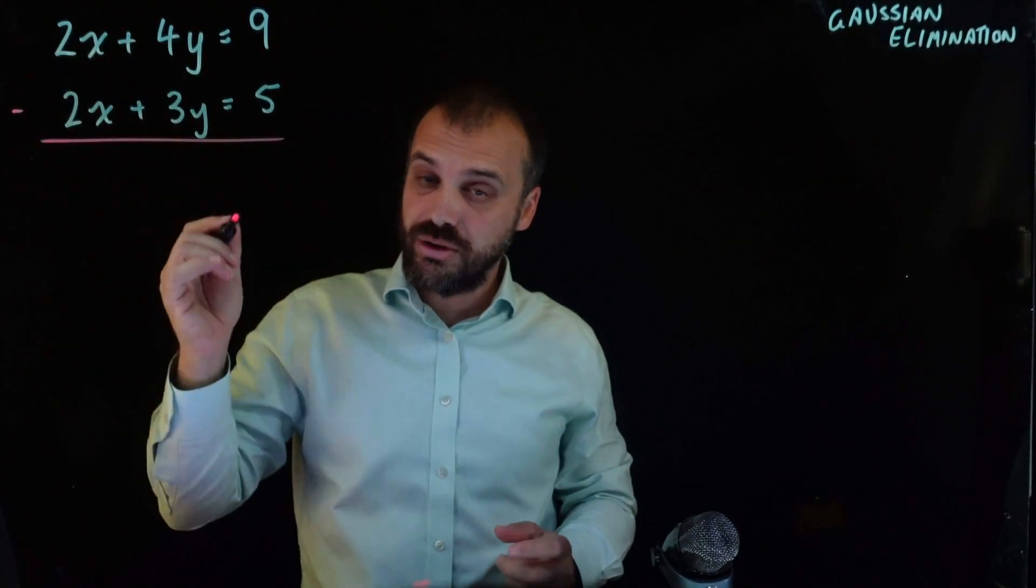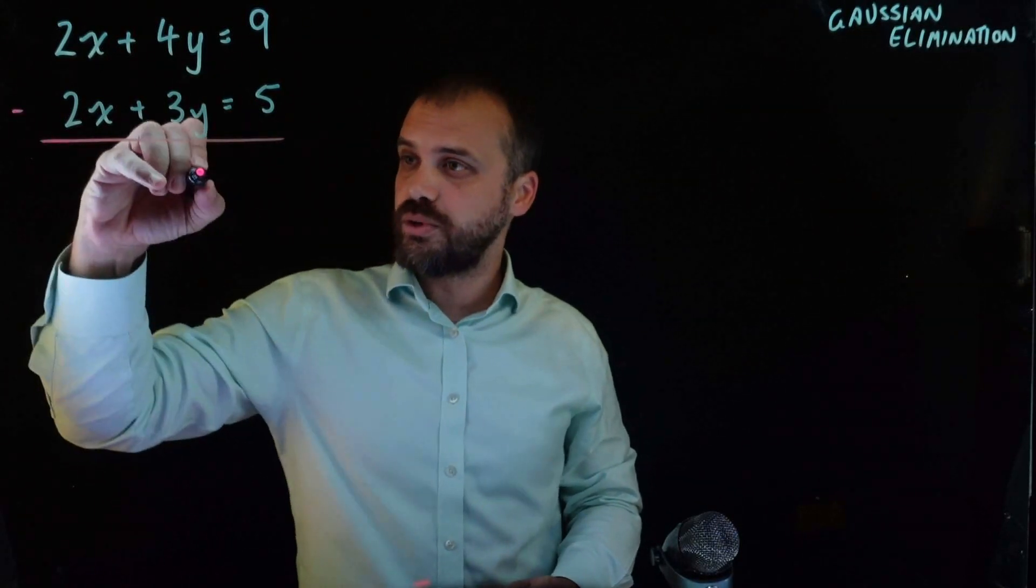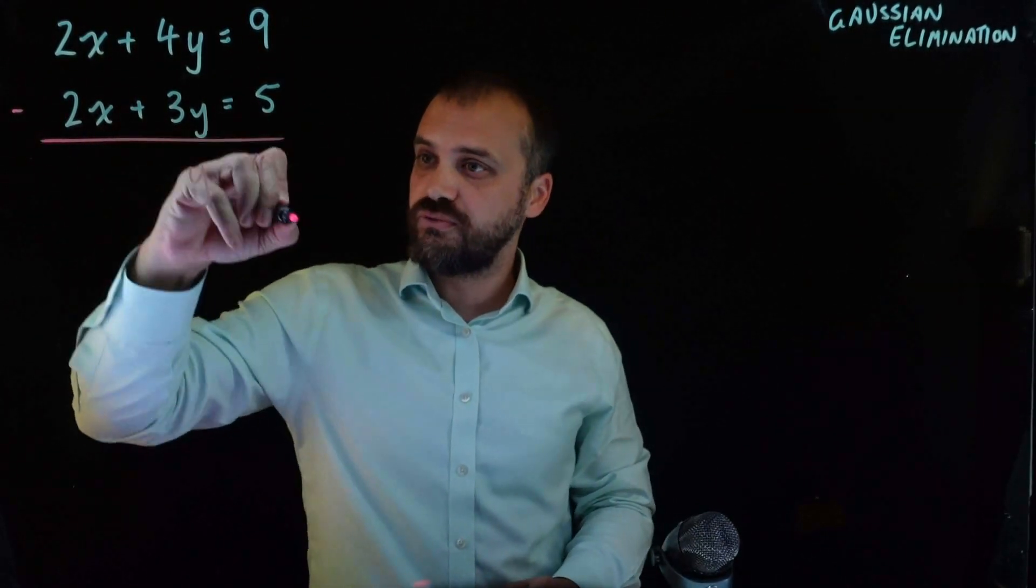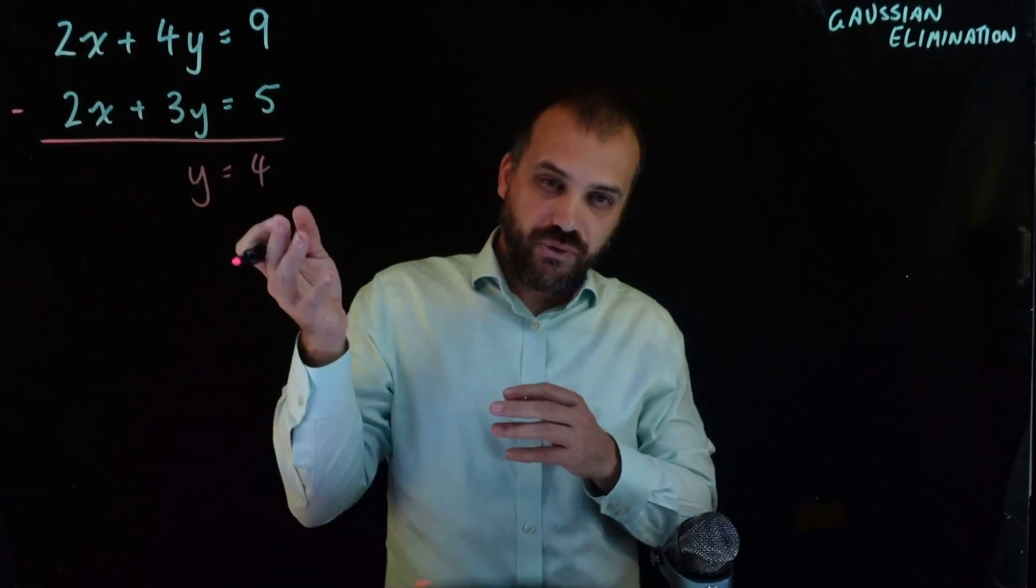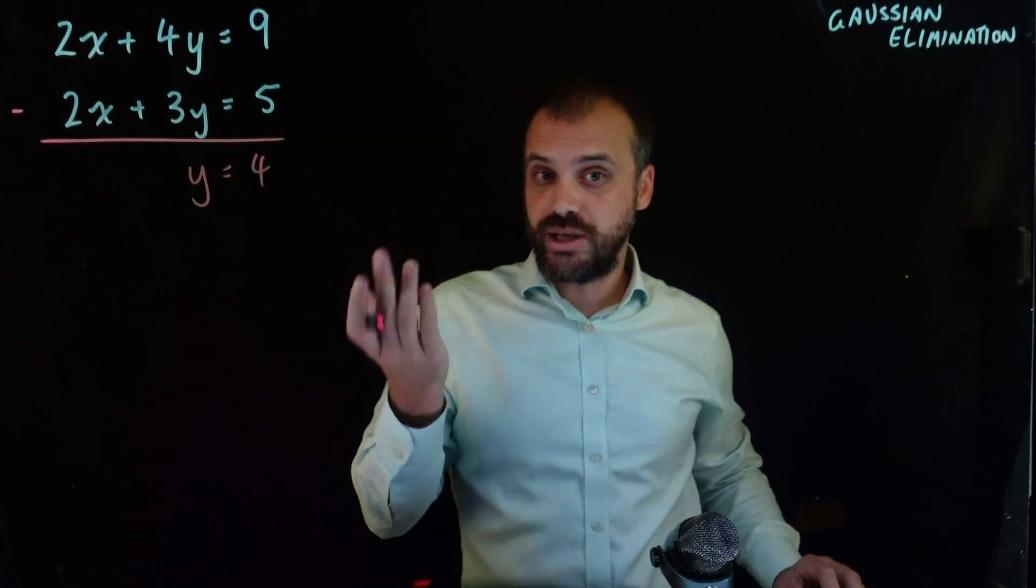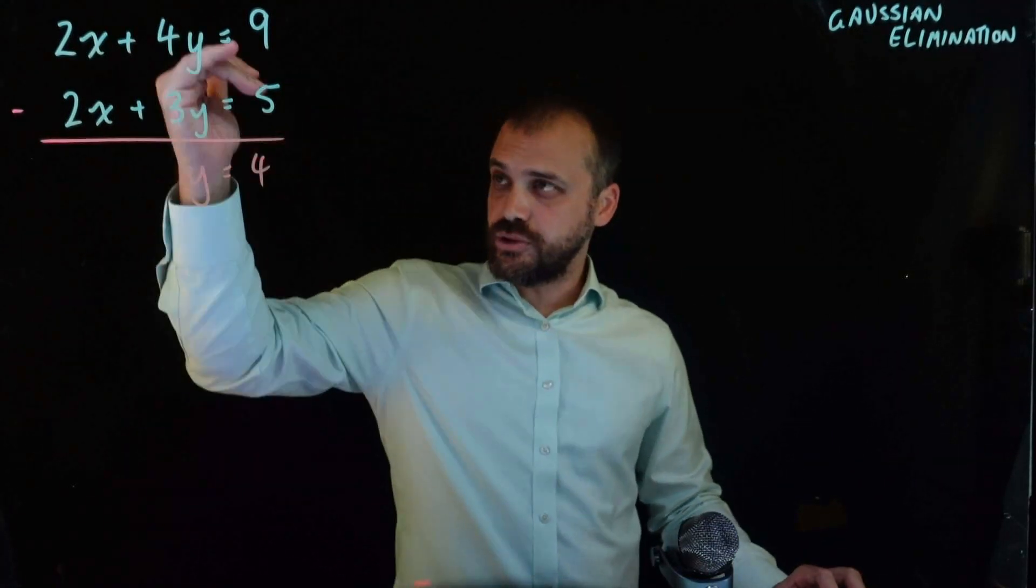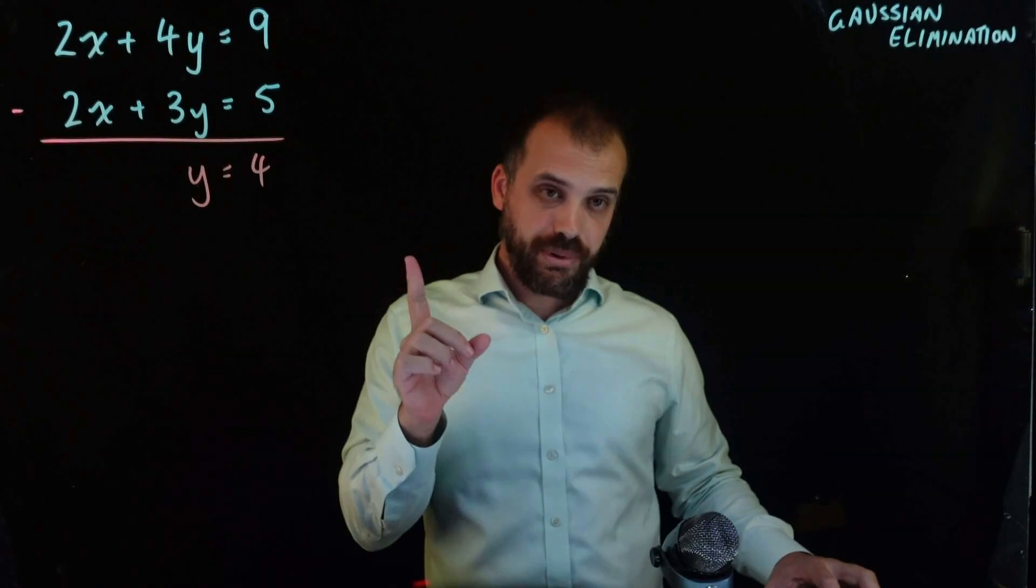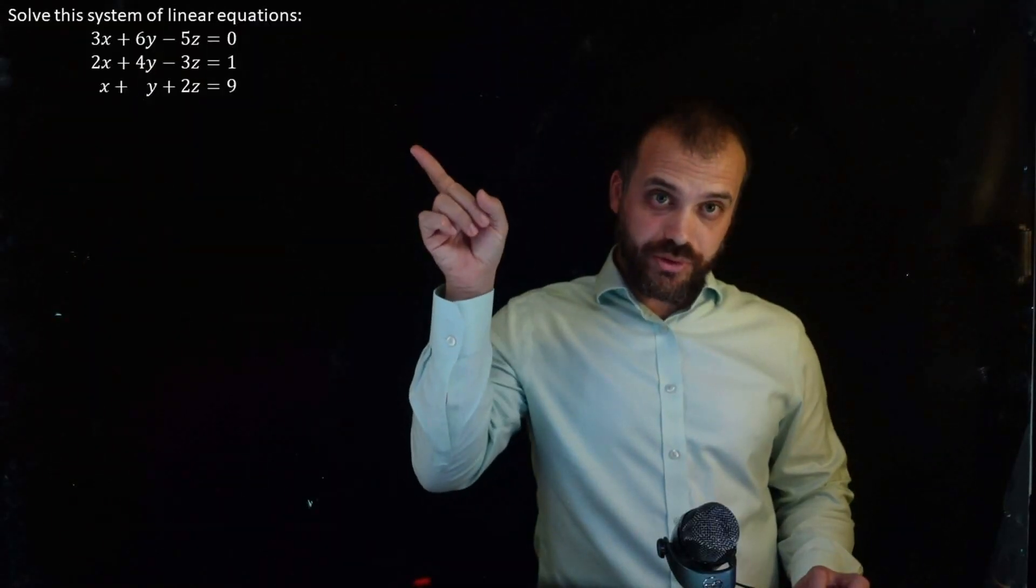So 2x minus 2x is 0x, 4y minus 3y is y, and 9 minus 5 is 4. Now that you know that y equals 4, you could sub y equals 4 back into there and find out what x is. So that's all well and good if you've got two equations and two variables, but what if you had more than that?